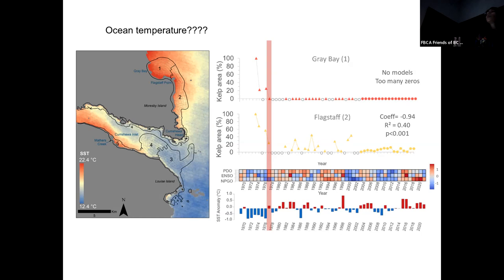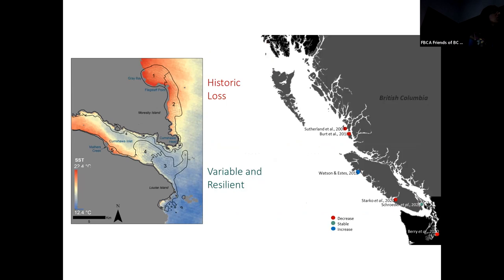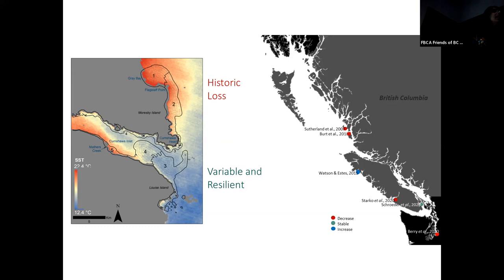Other regions have been very resilient — even though kelp went down during warm periods, it returned. There are no understory species colonizing those areas. So what we see in many areas of British Columbia is there are losses of kelp — illustrated by the Haida Gwaii region — and there are areas where kelp varies but is resilient, and given that environmental conditions change and become more positive with colder conditions, they can rebound and return to a certain level.